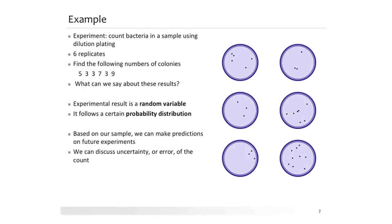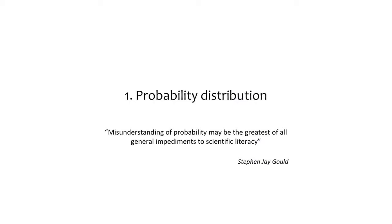Let's start with an example. Imagine you count bacteria in a sample using dilution platings — you see colonies in every plate. You did the experiment in six replicates and got the following numbers: 5, 3, 3, 7, 3, and 9. There is a difference — replicated experiments under the same conditions show different results. The experimental result is a random variable, and it follows a certain probability distribution. Based on this sample of six numbers you can make predictions about future experiments and calculate errors and uncertainties.